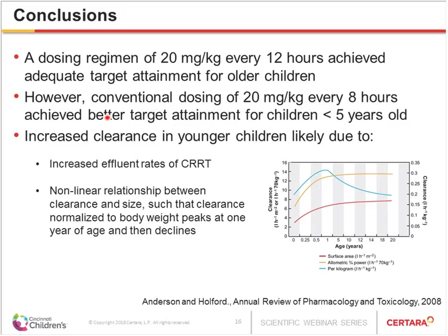We concluded that 20 mg per kg every 12 hours achieved adequate target attainment for older children. However, conventional dosing of Q8 — similar to what children without kidney injury receive — achieved better target attainment for children less than five years. This was likely due to higher per-kilo effluent rates in younger children and the well-known non-linear relationship between clearance and size, where clearance normalized to body weight peaks at one year of age and then declines, resulting in increased endogenous clearance when PK parameters were allometrically scaled.